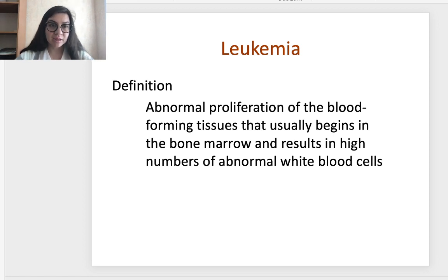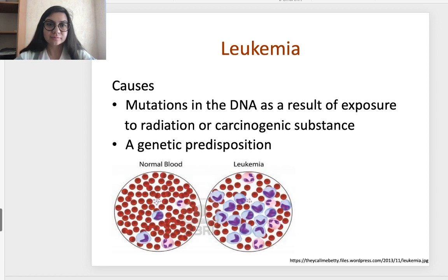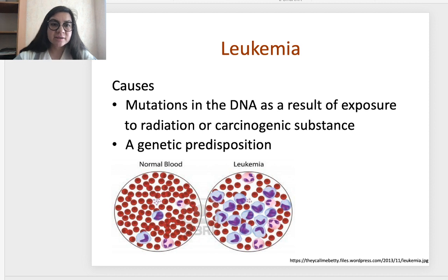What is leukemia? It is a disease — a syndrome that presents with leukocytosis. Leukemia is abnormal proliferation of blood-forming tissue that usually begins in bone marrow and results in high numbers of abnormal white blood cells. As with all malignant disorders, we do not know any single exact cause, but it is confirmed that mutations in DNA as a result of exposure to radiation or carcinogenic substances can lead to leukemia. Research also shows an obligatory genetic predisposition to leukemia.